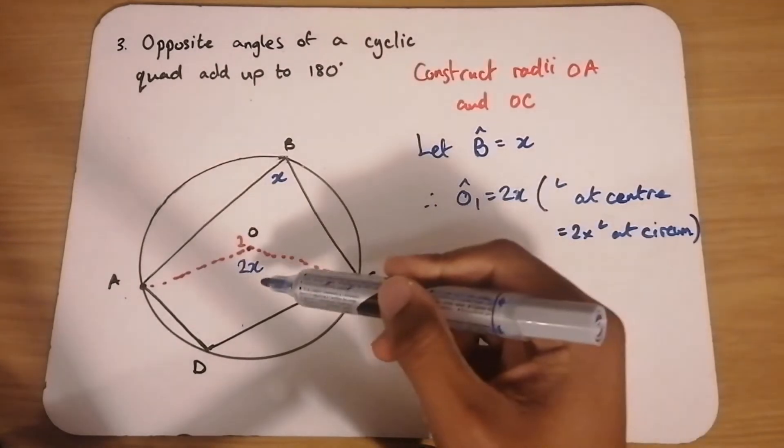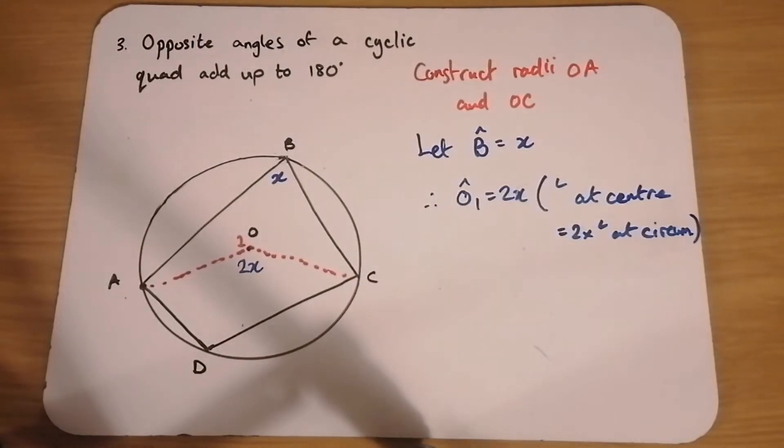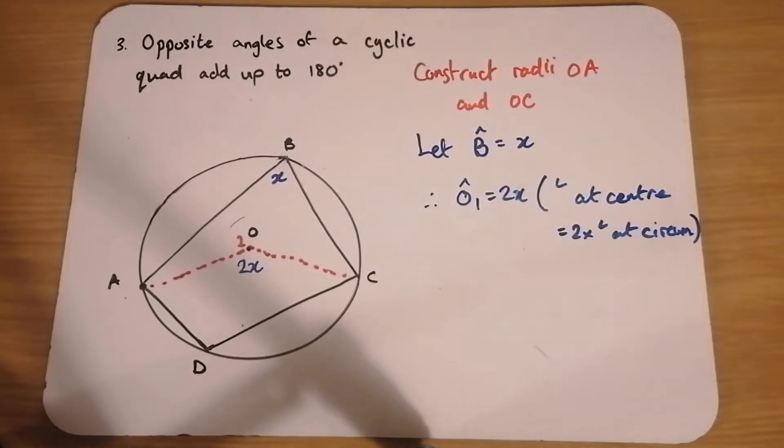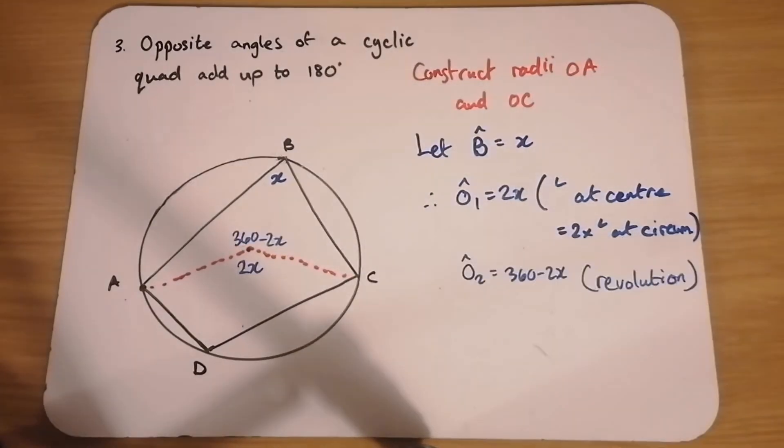Now, if angle O1 is equal to 2X, angle O2 would be the angle part of the revolution. So angle O2 should be 360 minus 2X.